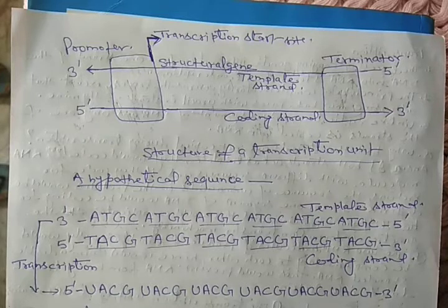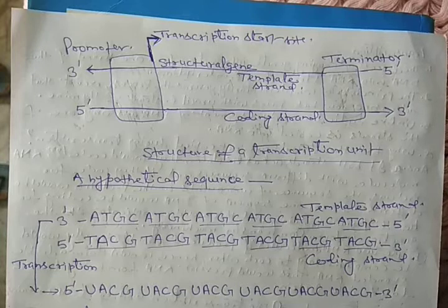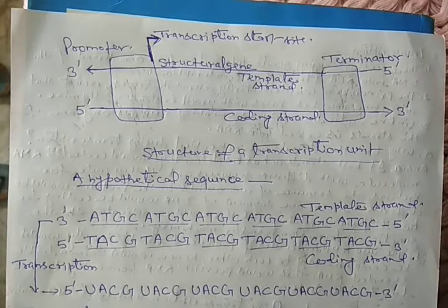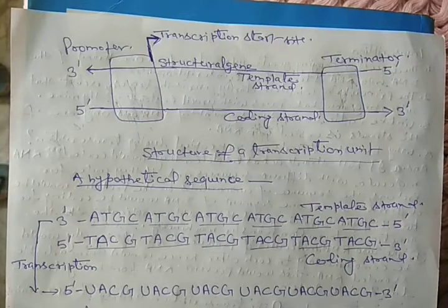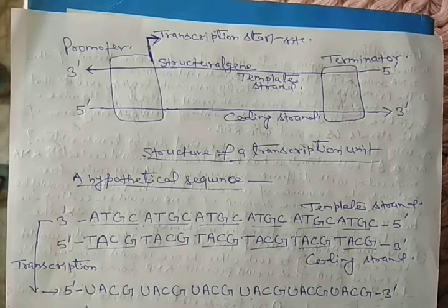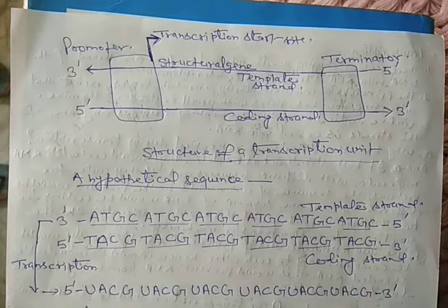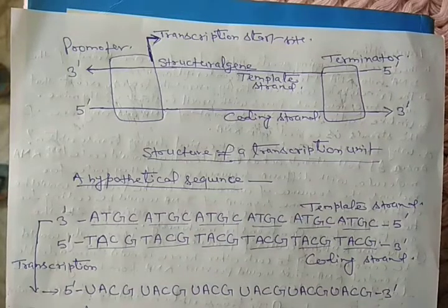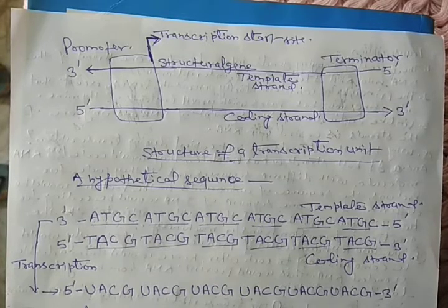That is why a segment of DNA is transcribed at a time. There should be a defined boundary for the segment which is to be transcribed. A transcription segment consists of a unit, and that unit is called the transcription unit.